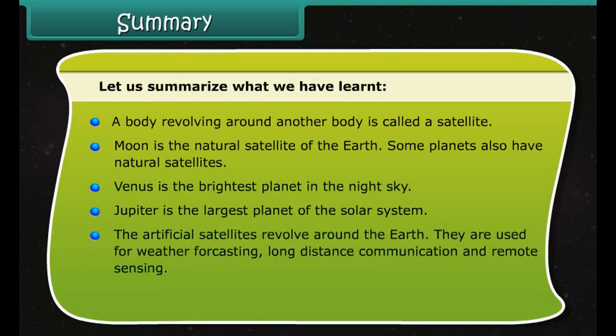Uranus is the seventh planet from the Sun and the first planet to have been discovered by the use of a telescope. After Jupiter and Saturn, Uranus is the third biggest planet of the solar system, also made up mainly of hydrogen and helium with some rings around it. The most interesting point about Uranus is that it rotates on its axis from east to west, whereas all other planets rotate from west to east.